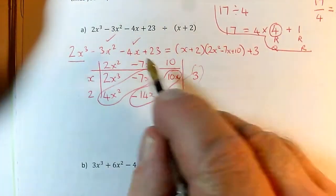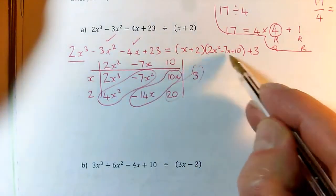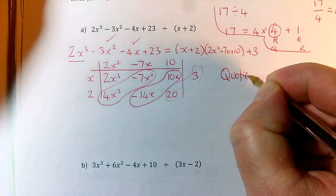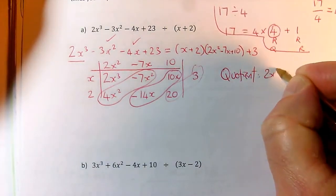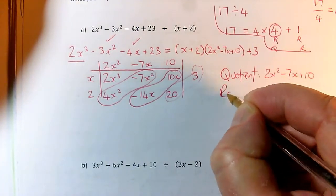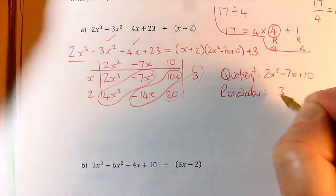So one way to express this answer is, when I do this divided by this, how many of these do I need to make that? Well, the answer is I need that many. So the quotient is the 2x² - 7x + 10, and the remainder is my 3.